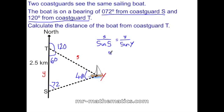So we're going to substitute in our known values to derive an equation we can solve for the length s. So s over the sine of 72 is equal to lowercase y, which is 2.5, over the sine of 48.